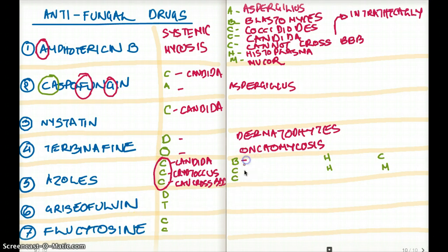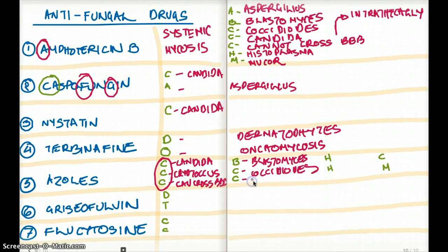What about the others? What about ketoconazole? So those are blastomyces, coccidioides, candida for the C. H is for hypercortisolism. And the last H is for histoplasma. You must be wondering, why am I adding candida here when I already had candida here?